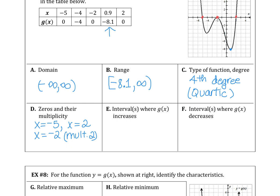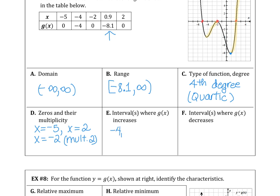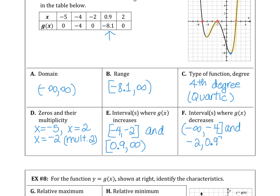For part E, what are the intervals where g(x) increases? Looking at the graph, the function is increasing from about x = -4 to x = -2, and also increasing from x = 0.9 to infinity. The function is decreasing from negative infinity to x = -4, and also decreasing from x = -2 to x = 0.9.